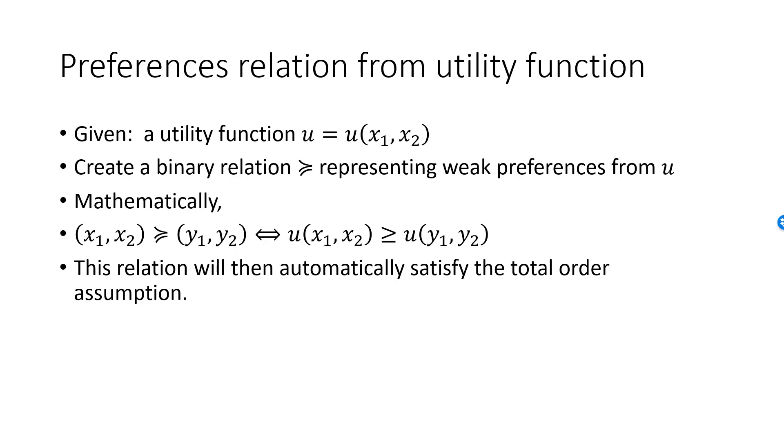This follows from the fact that greater than or equal to is a total order on R. For example, totality is satisfied. It must be the case that the utility from the first bundle is greater than or equal to the utility of the second bundle, or the utility from the second bundle is greater than or equal to the utility of the first bundle, or both. And it's straightforward to check the other three conditions: reflexivity, antisymmetry, and transitivity.